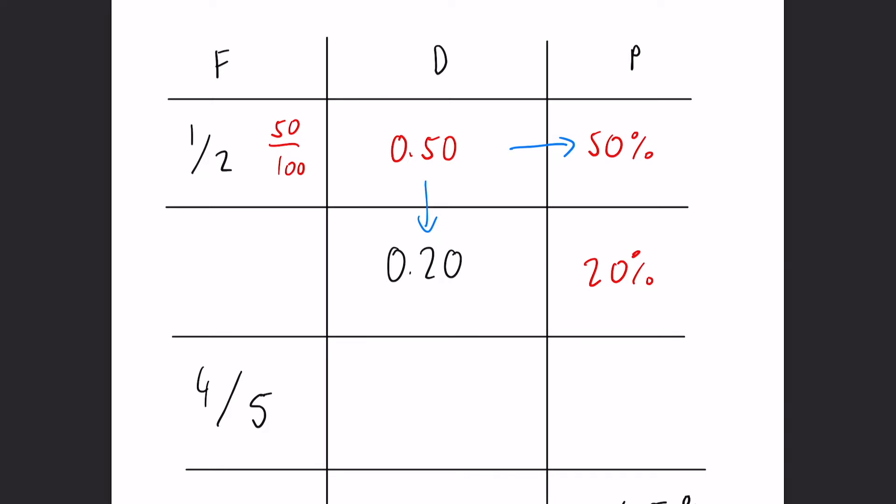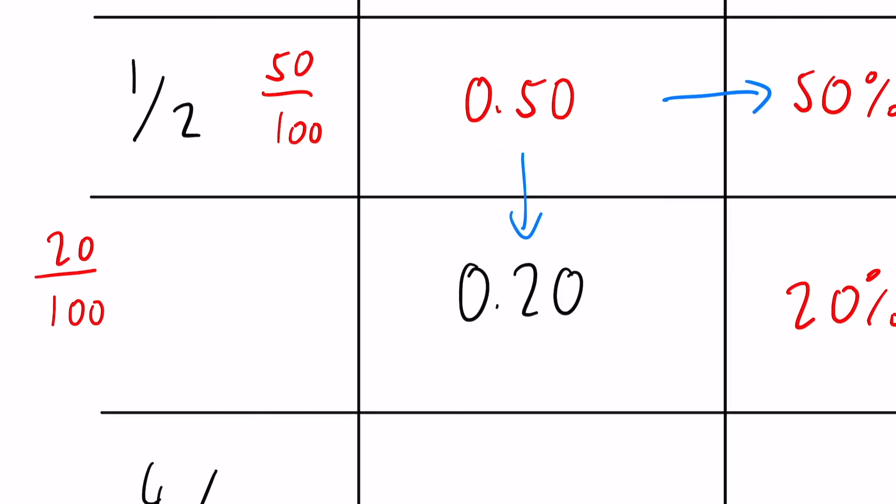And again on the other side, on the fractions, we can just write this as 20 over 100, and eventually we simplify this down if we divide it by 10, because we can here. We have 2 over 10, and because they're both even numbers, we can divide this by 2. So ultimately, we're going to go down to a fifth.